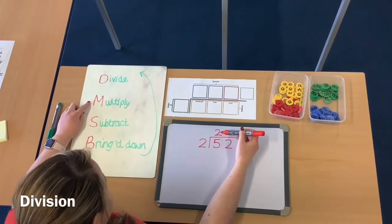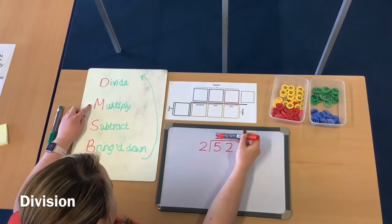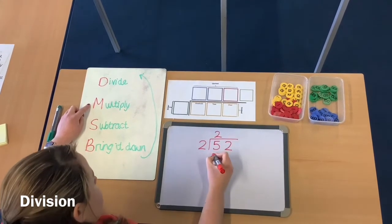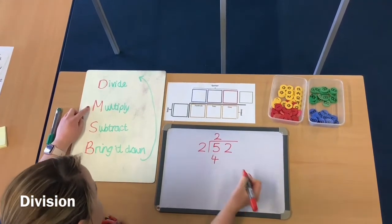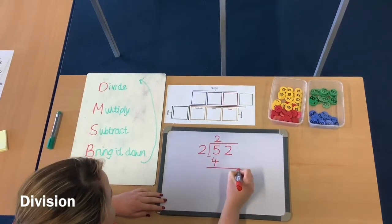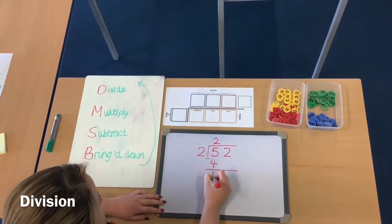I'm then going to go to step 2, which is multiply. So I'm going to multiply what I've got for the quotient by the divisor. So I'm going to do 2 times 2, which is 4. Pop that underneath. Step 3, I then subtract. So 5 tens subtract 4 tens is 1 ten. So I've got that there.